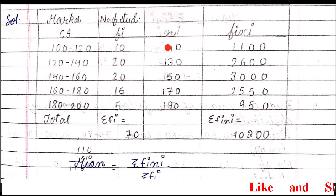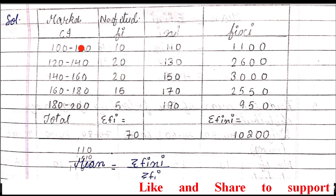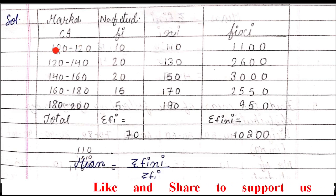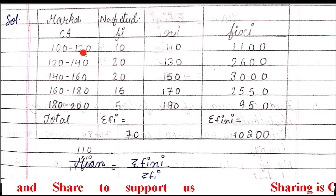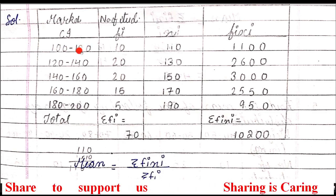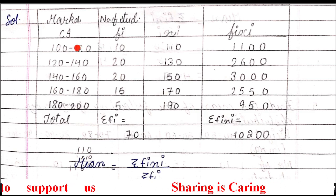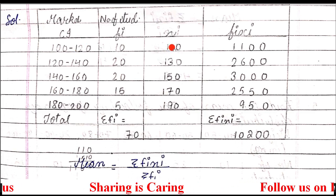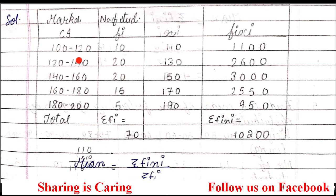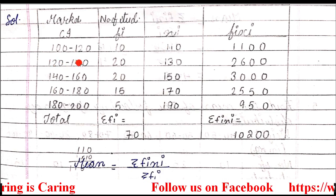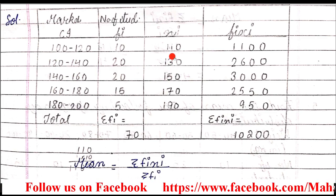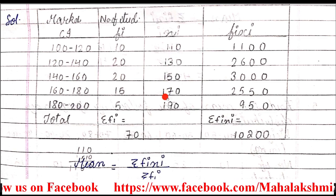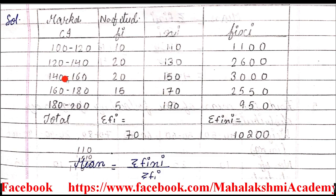In the same way, 140 and 120 added and divided by 2 gives 130. Like this, we fill the xi (class mark) column with the help of the class interval. Now to fill the fi·xi column, we multiply fi and xi. So 110 multiplied by 10 gives 1100, and 130 multiplied by 20 gives 2600. Fill all the data by multiplying the corresponding terms of fi and xi.